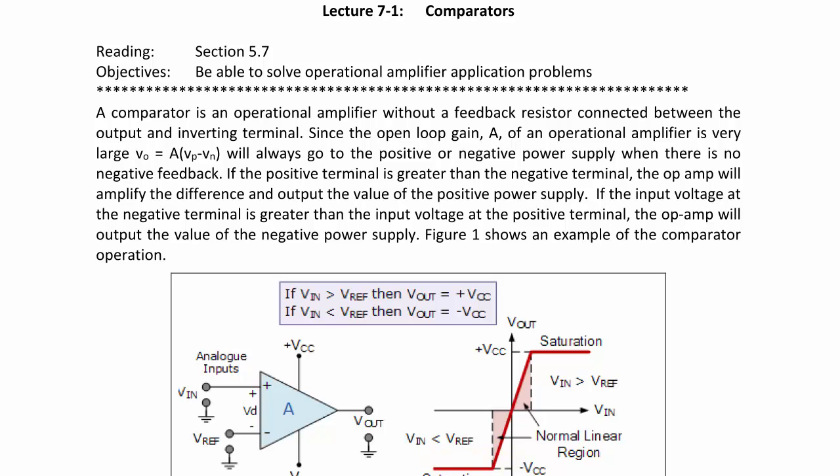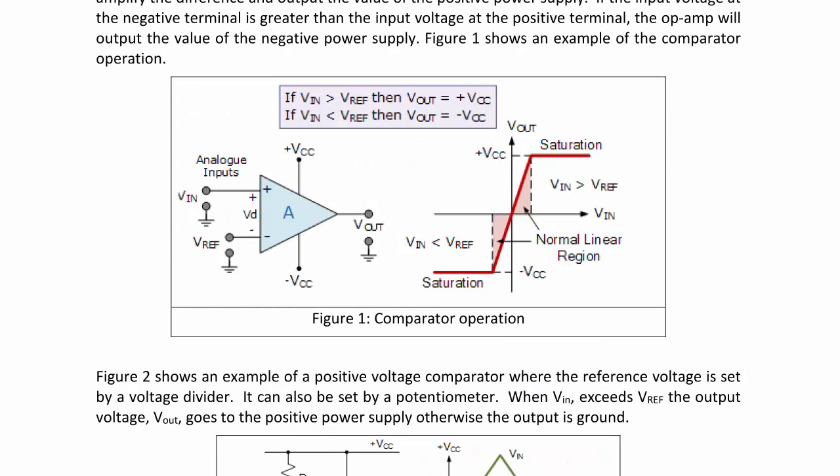Figure 1 shows an example of comparator operation. Notice that unlike other op amps with negative feedback studied this quarter, there would be a linear region and a saturation region. However, when you remove the feedback resistor, the op amp only operates at the positive or negative power supply, so it is always in saturation. Whether it's positive or negative saturation depends on the difference between the voltage at the positive and negative terminals.